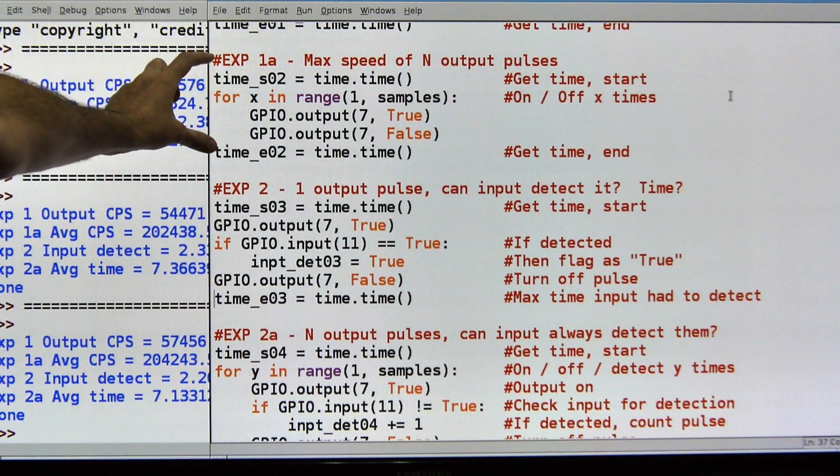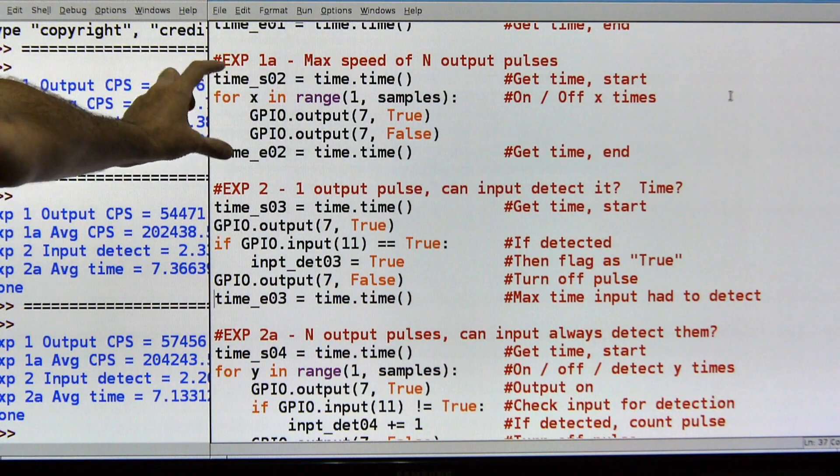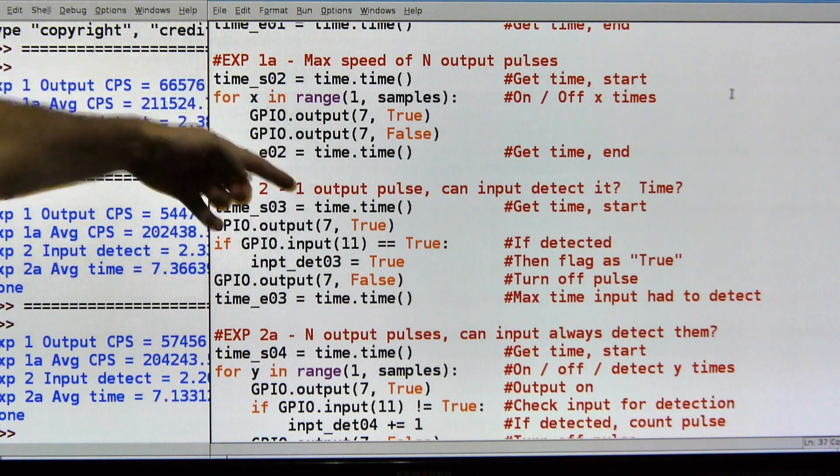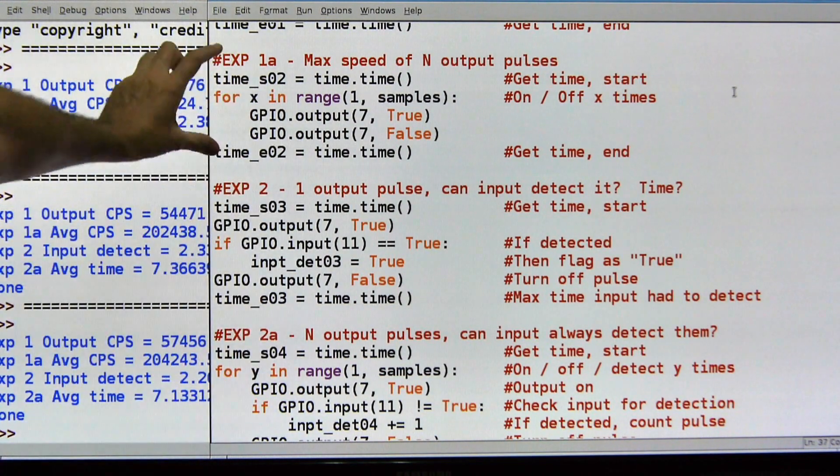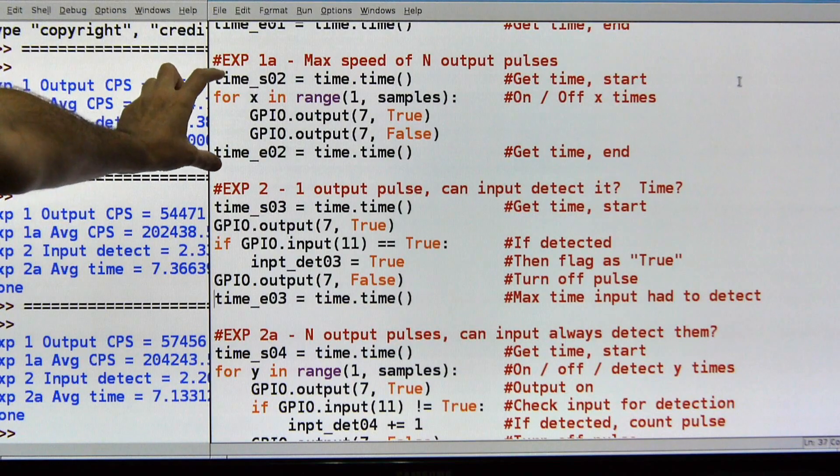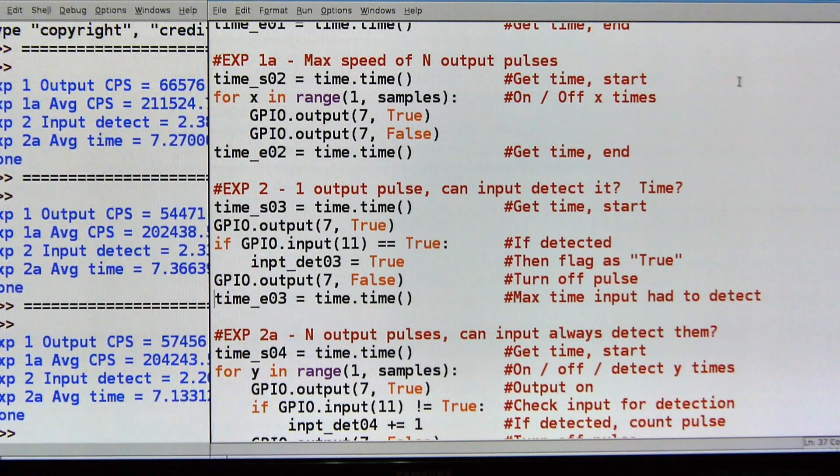So experiment one, what is the maximum speed of one pulse? So I'm going to turn the output on and off, and I want to know how fast that is. So I grab the time, I turn the output pin to true, then I turn it to false, so on and off, and then I grab the time again, and the difference between those times is how long that took. So that's one pulse, that's one experiment.